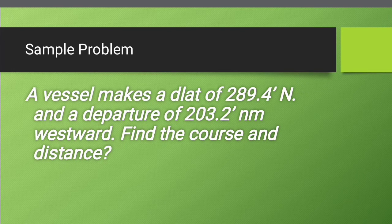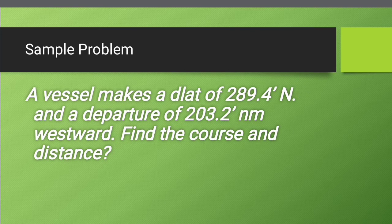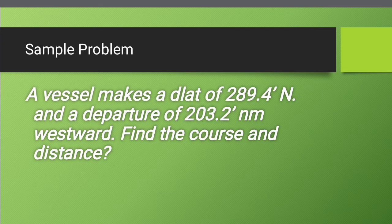Next example, we have a vessel makes a difference of latitude of 289.4 minutes north and a departure of 203.2 minutes westward. So find the course and the distance.